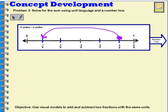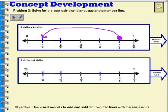I want to show you this. If we had 1 sixth plus 4 sixths, what would it equal? So, I'm going to mark that I have 1 sixth. So I'm going to put my little dot here.